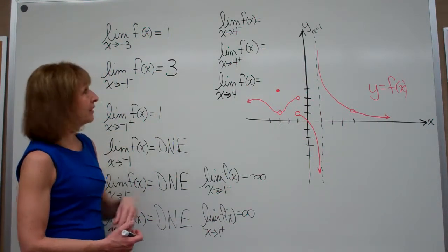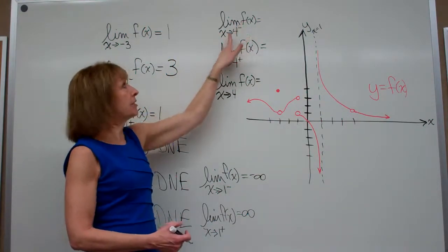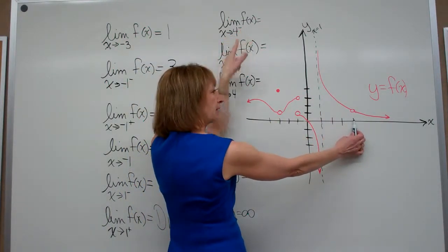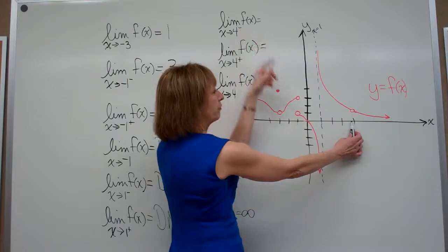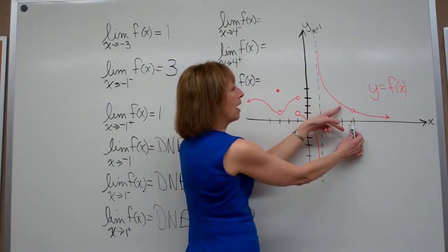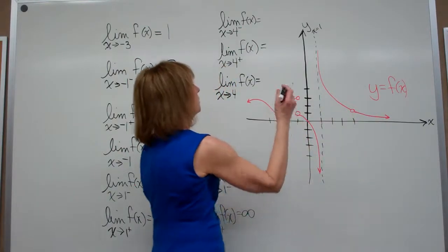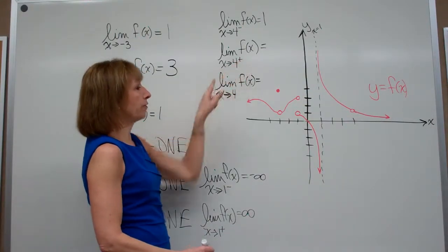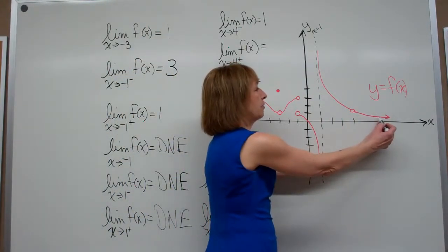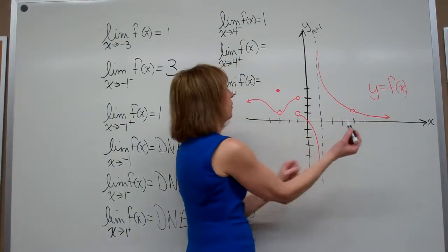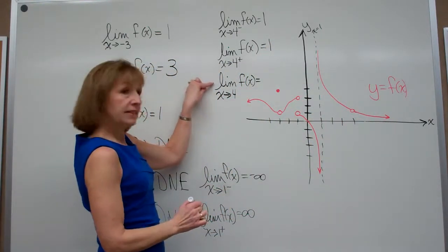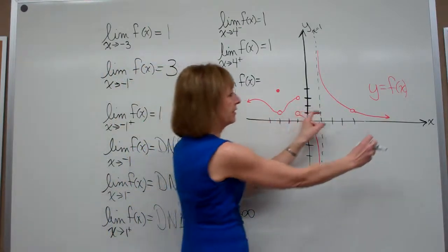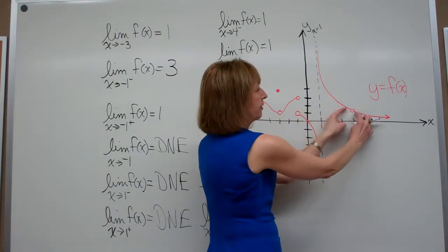Three more to look at. The limit of my function values as x approaches 4 from the left: I have x = 4, and approaching from the left, my y values are going to 1. The limit as x approaches 4 from the right: my function values are also going to 1. And the limit as x approaches 4 with no sign — from both sides — my y values are approaching 1 from both sides, so the limit equals 1.